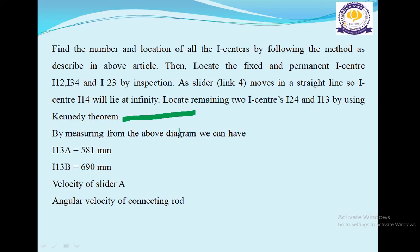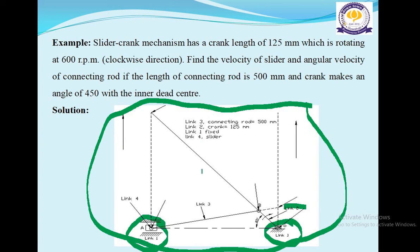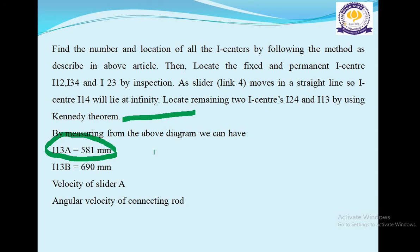By measuring from the diagram, we have I13A equals 581 mm and I13B equals 690 mm. So we can find the velocity of slider A and angular velocity of connecting rod.